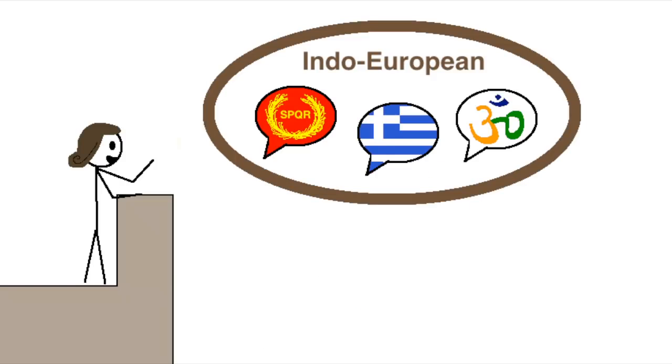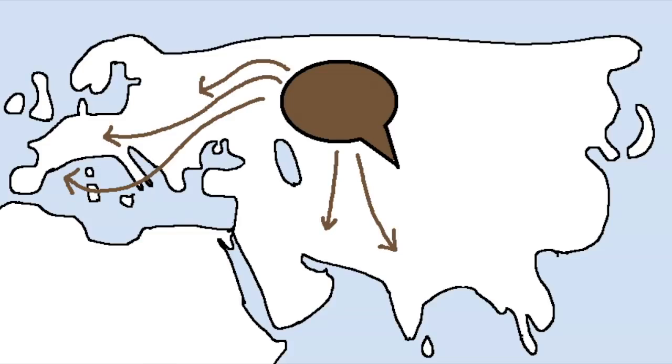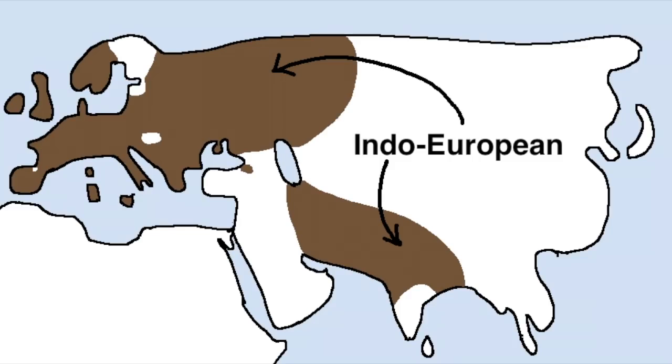Jones's speech is known today for proposing the existence of the Indo-European language family, the idea that most of the languages of Europe, Iran, and the Indian subcontinent are all variations of what used to be one single language. But at the time, it wasn't clear what to call this language family. Indo-European eventually became the standard, for obvious reasons.